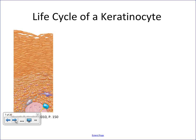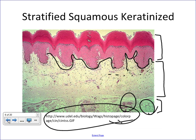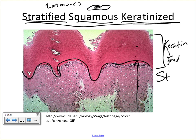The epidermis is made up of a few different cell types, but the most abundant cell found within it is called a keratinocyte — those squamous cells we just talked about. When we want to talk about the life cycle of a keratinocyte, we need to think about how the epidermis is organized into various layers called strata.